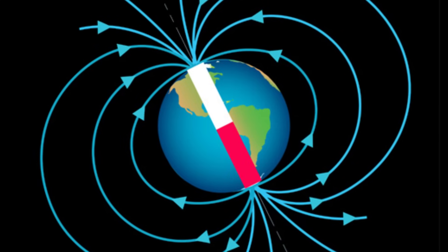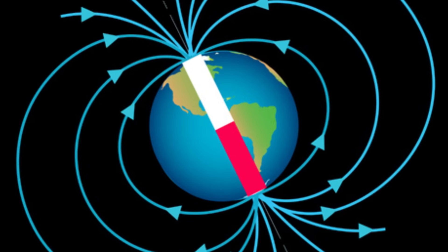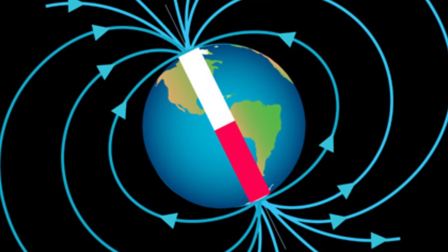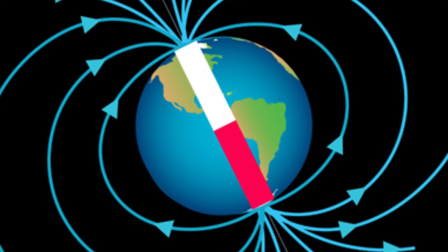The magnetic field is generated by the movement of liquid metals, such as iron and nickel, in Earth's outer core. This movement creates electric currents that produce the magnetic field. However, these currents can become chaotic over time.